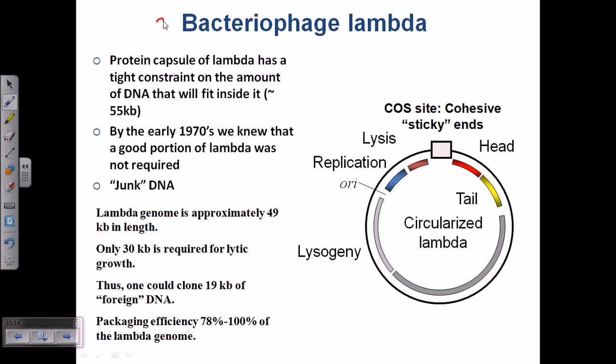Now let us talk about the second type of vector. It is called a bacteriophage vector, and when we talk about the bacteriophage vector, usually we are talking about the lambda vector or lambda phage vector.